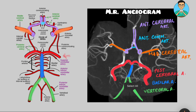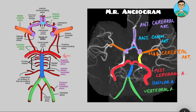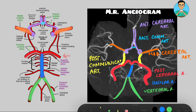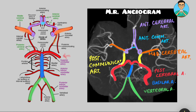Now this anterior system, which is made up of the middle cerebral artery, the anterior cerebral artery, and the anterior communicating artery, is communicated with the posterior system by a set of posterior communicating arteries. As you can see over here, these are known as posterior communicating arteries. In the schematic, they are these arteries.